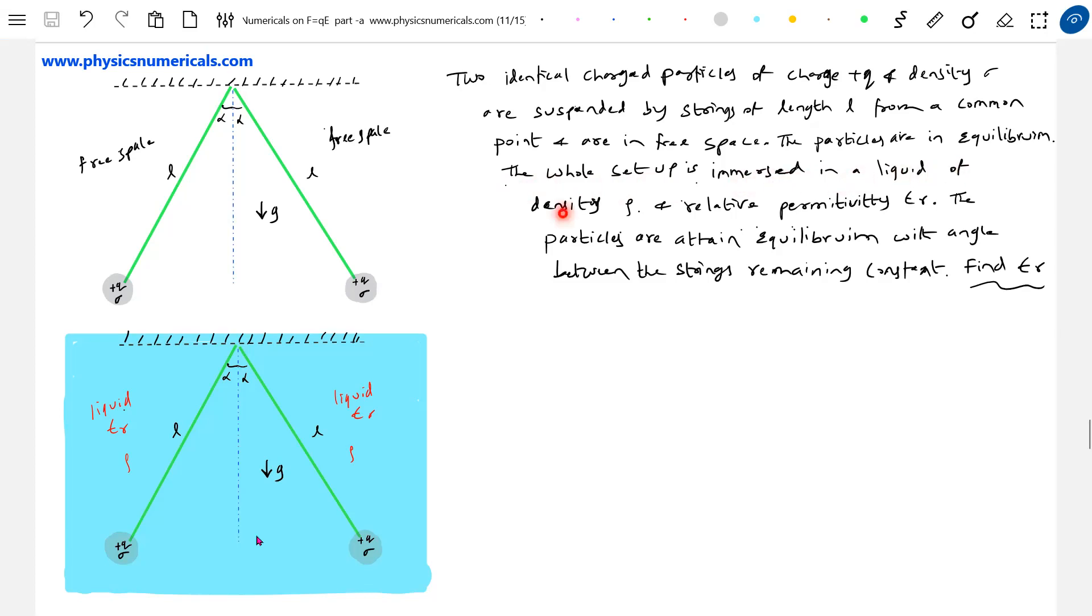Now the whole setup is immersed in liquid of density rho and relative permittivity epsilon_R. The particles again attain equilibrium with the angle between the strings remaining constant. It was 2 alpha, find the relative permittivity of the liquid. This has to be determined.